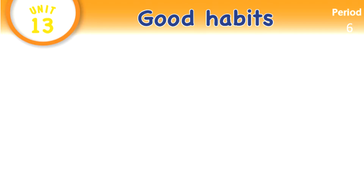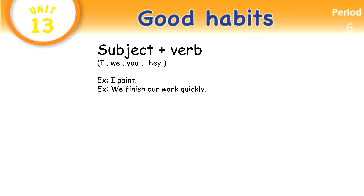Now my students, don't forget that when the subject is I, we, you, or they, we don't add S to the verb. For example: I paint. We finish our work quickly.